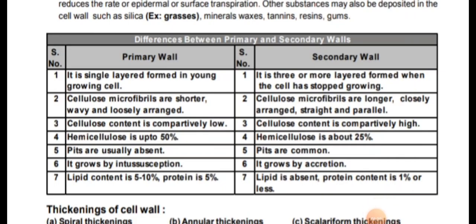Cellulose content in primary wall is comparatively very low, whereas in secondary wall the content of cellulose is maximum due to more deposition and maturation. Hemicellulose content in primary wall is up to 50%, whereas in secondary wall it is about 25%. Pits are usually absent in primary wall but common in secondary wall. Primary wall grows by intussusception whereas secondary wall grows by accretion. Lipid content in primary wall is 5 to 10% and protein about 5%, whereas in secondary wall lipid is absent and protein is 1% or less.